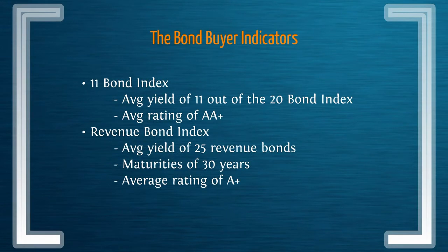In addition, we have an 11 Bond Index with a rating of AA+. And to focus on revenue bonds as well, we have the Revenue Bond Index — these are 25 revenue bonds with maturities of 30 years and ratings of at least A+.